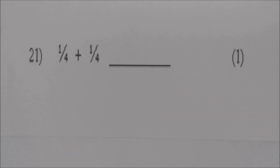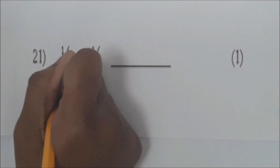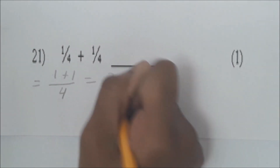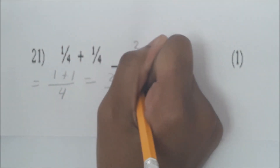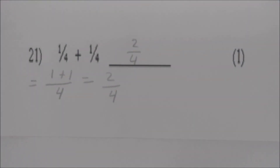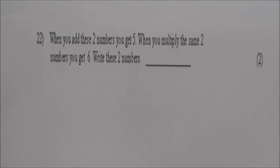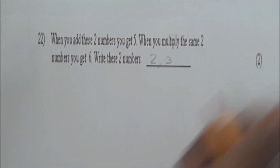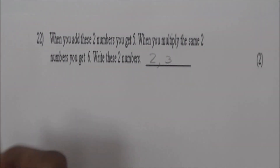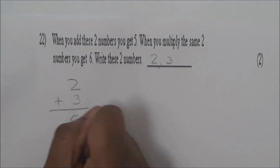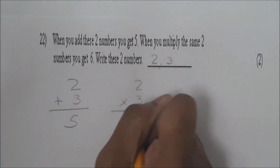Number 21: 1 over 4 plus 1 over 4. That's a quarter plus a quarter: 1 plus 1 over 4 equals 2 over 4. Reduce by the greatest common factor 2 to get 1 over 2. Number 22: When you add two numbers you get 5; when you multiply the same two numbers you get 6. What are they? Two and three. Check: 2 plus 3 equals 5, and 2 times 3 equals 6. Very good.